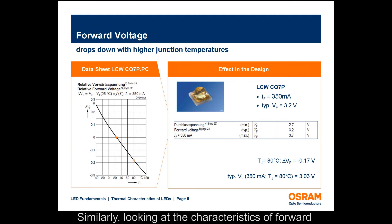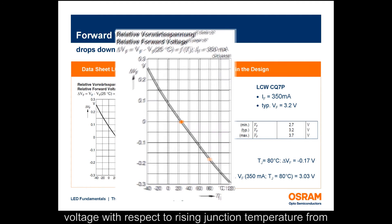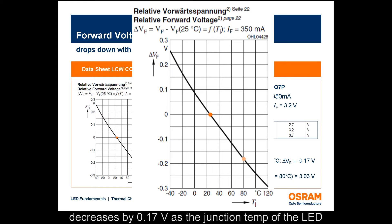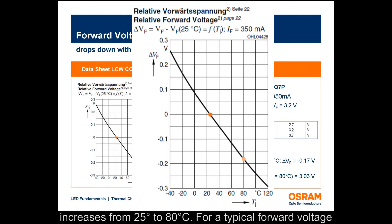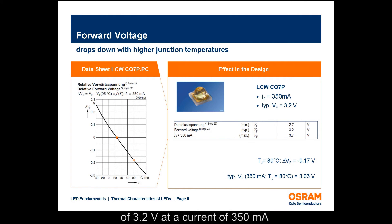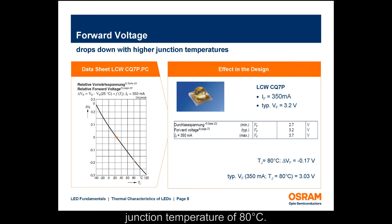Similarly, looking at the characteristics of forward voltage with respect to rising junction temperature from the datasheet of the Aslan SSL LED, we can see that the forward voltage at a constant current of 350 milliamps decreases by 0.17 volts as the junction temperature increases from 25 to 80°C. A typical forward voltage of 3.2 volts at 350 milliamps at 25°C would decrease to 3.03 volts at a junction temperature of 80°C.